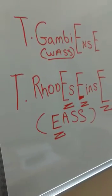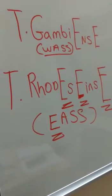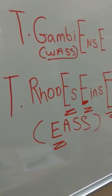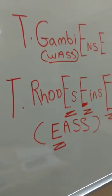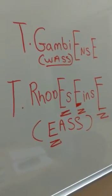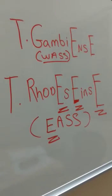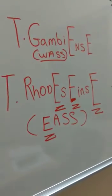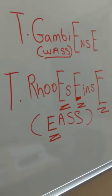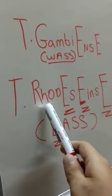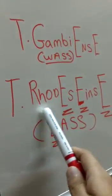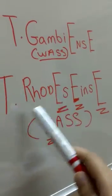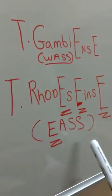Another way to remember T. rhodesience as East African sleeping sickness is a saying: 'you ride east, you keep moving east' — meaning if you're determined to do something, you just keep at it. So 'rod' like riding, EEE, riding east — that's why T. rhodesience is East African sleeping sickness.